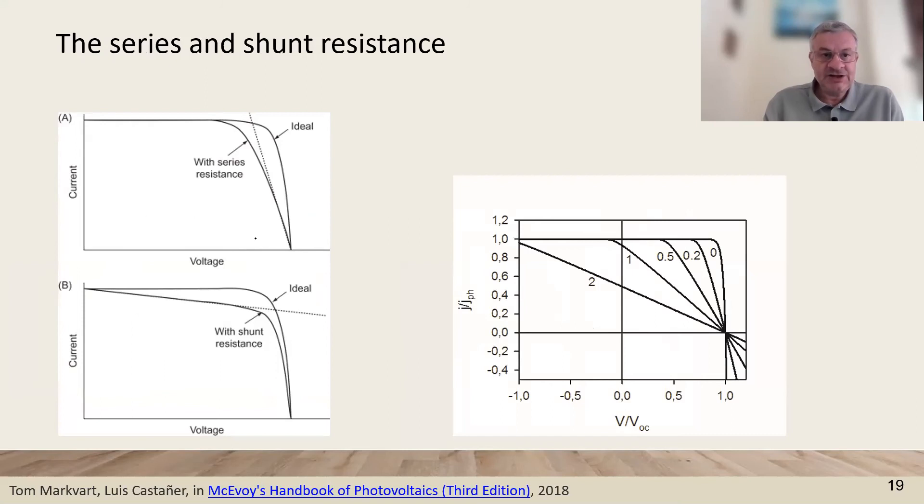Series and shunt resistance decrease the solar cell efficiency by affecting the fill factor only, not the short circuit or VOC value. But if the series resistance is very large, then in the end you also affect the photocurrent.